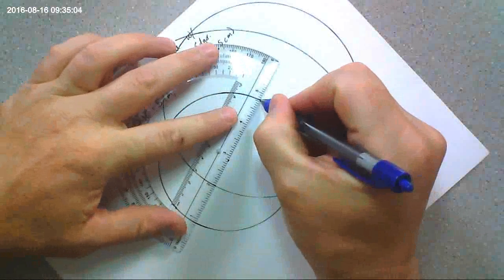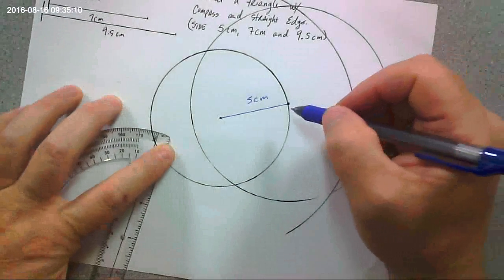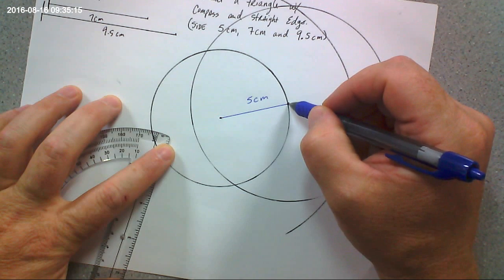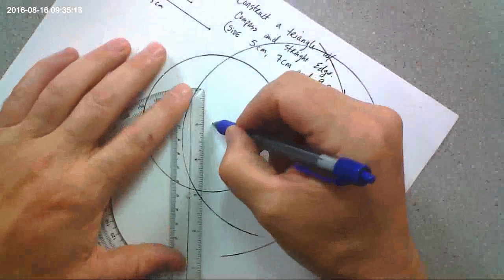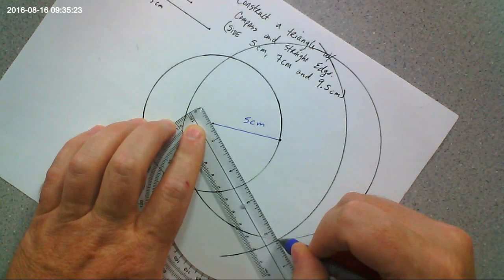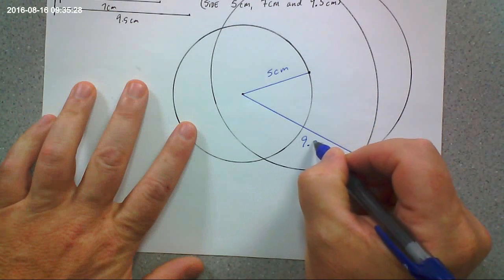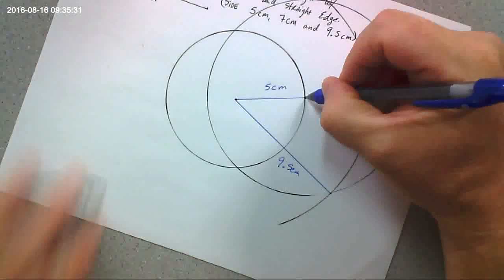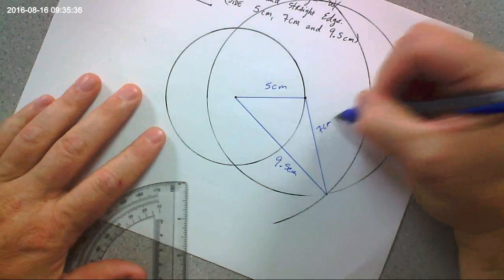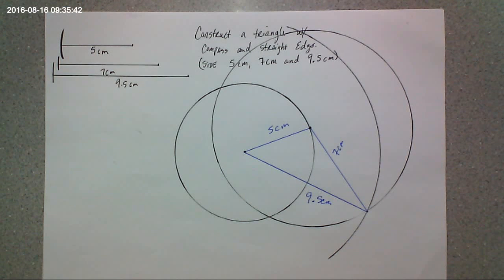So, would you guys all agree that this is 5 right here? Yes. That's 5. Supposed to be. Right? Would you agree that this right here from here to here is 9 and a half? 9.5. And then from here to here is 7. See how you do it? We good or bad?